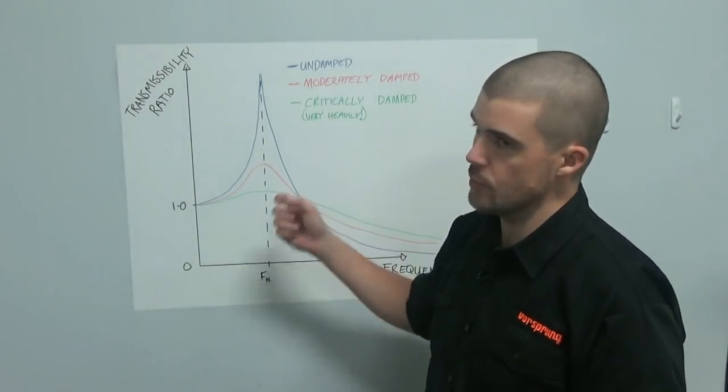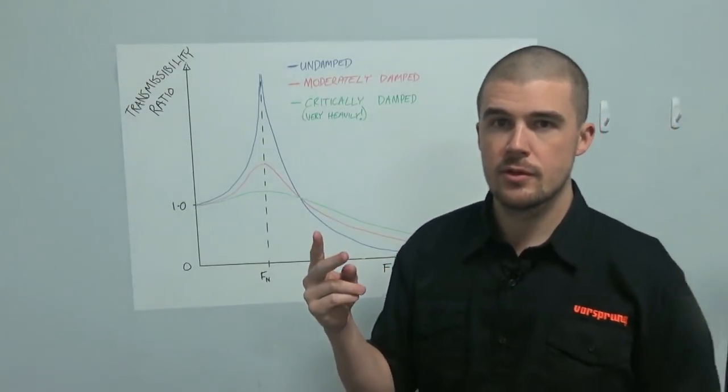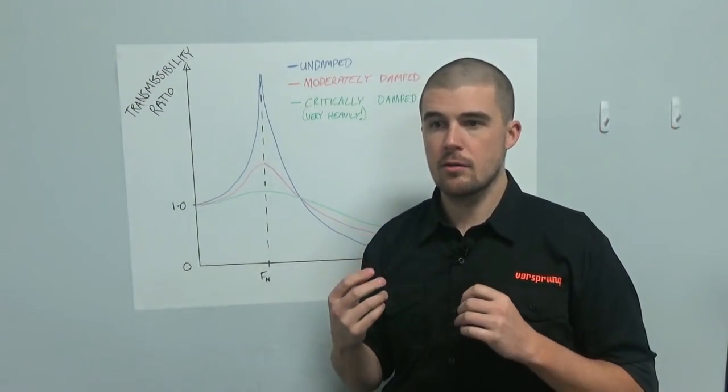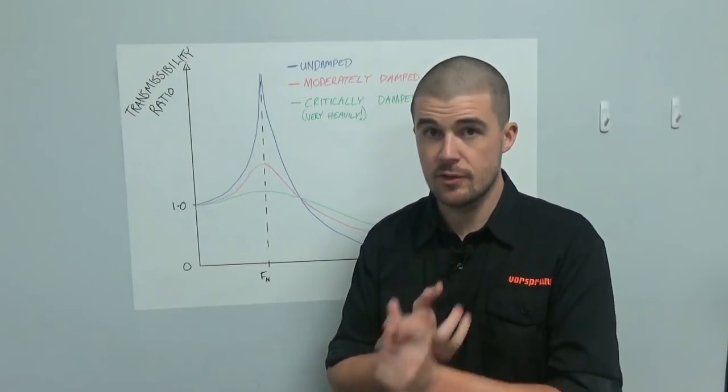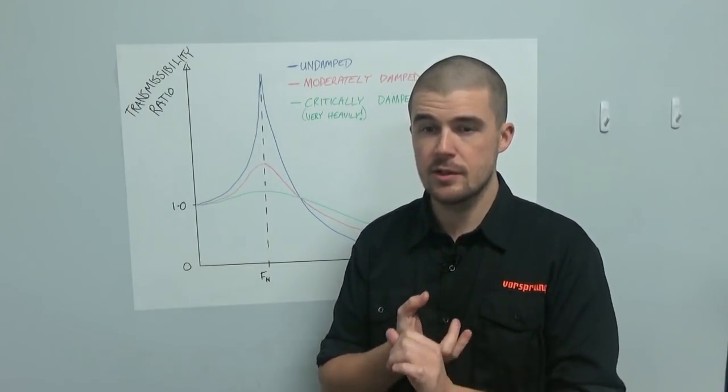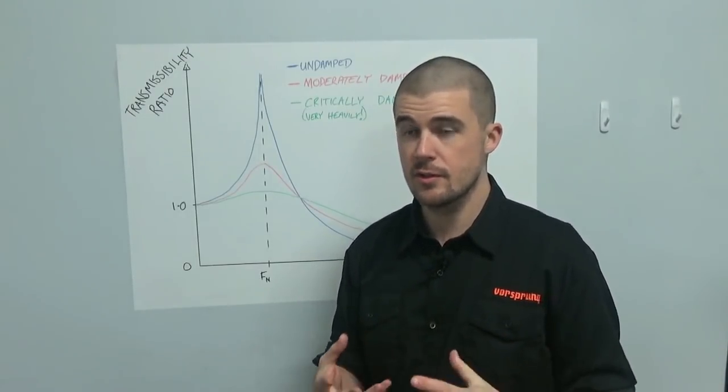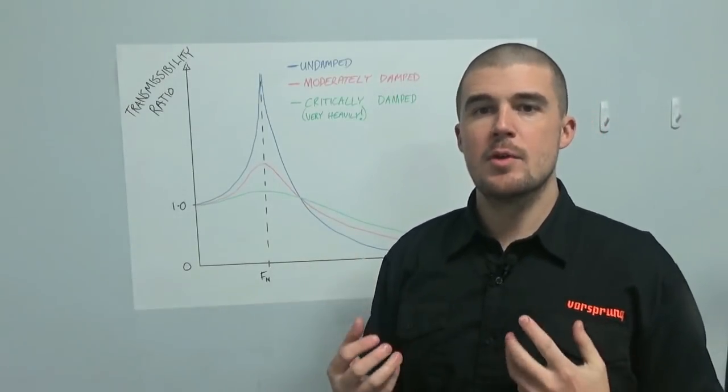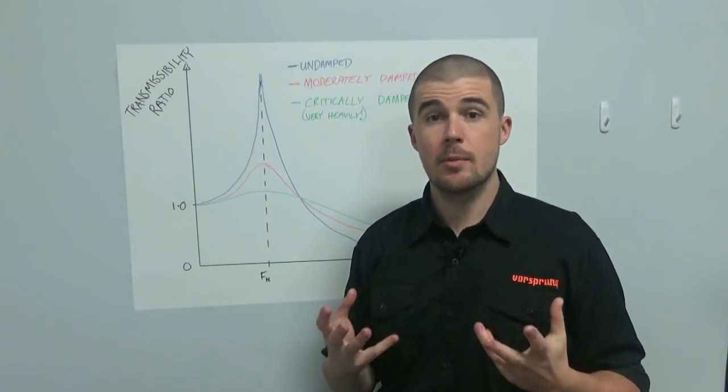Now, this transmissibility curve makes two major assumptions that are relevant in some cases to some vehicles, and particularly to industrial vibration isolation systems, but not actually an accurate measurement of anything for mountain bike suspension.